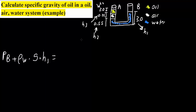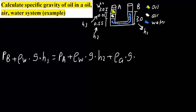Pipe A has more components, since we have oil, air, and water. So it's going to be the atmosphere Pa, because this is open to the atmosphere, plus rho water times gravity times H2. Then we add rho air times gravity times H3, from here to here. Finally, plus rho oil times gravity times H4, from here to here. These two sides will equal one another.